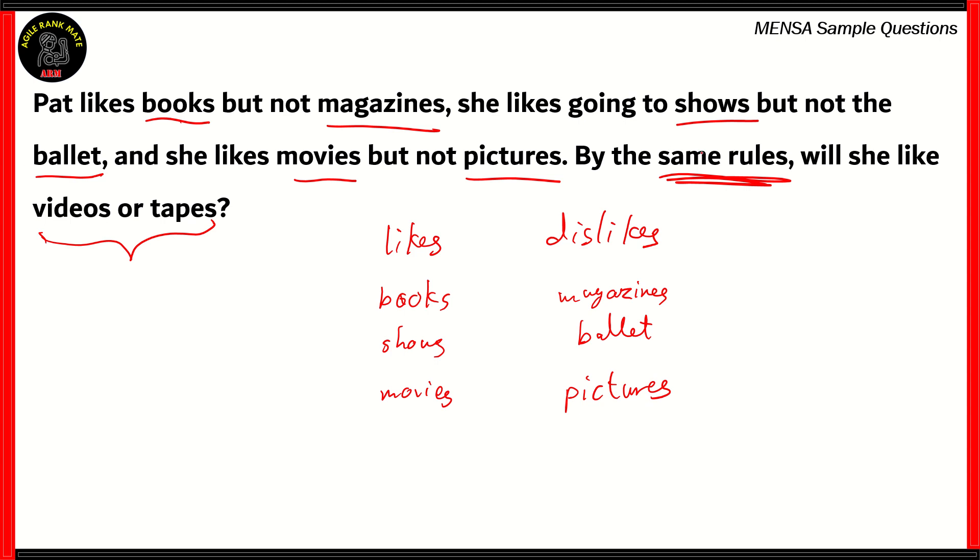Now if you look at the likes, you can see that Pat likes books, she likes shows, she likes movies. Now as you can see, all of them contain at least one O in the word. There are two O's in books, one O each, and one O in shows as well as movies. So therefore, the rule that Pat uses to like something is whether the word has an O in it. At least one O must be present in that word. So therefore she will like the hobby or the product.